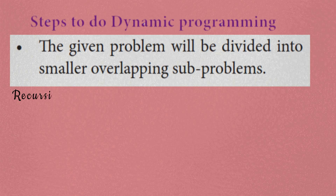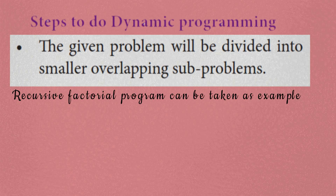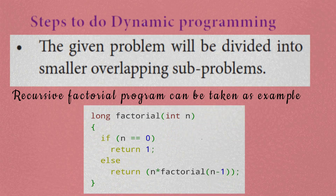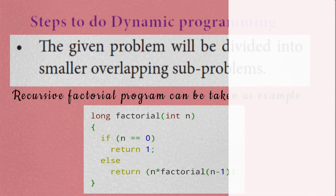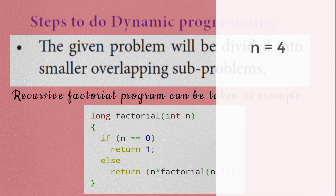We will use the recursive factorial program. The recursive factorial function is like this: n is equal to n into fact of n minus 1. We will store n to solve and get the answer. That value will be added to the answer, then fact of n minus 1. For example, n is equal to 4: 4 into fact of 4 minus 1.